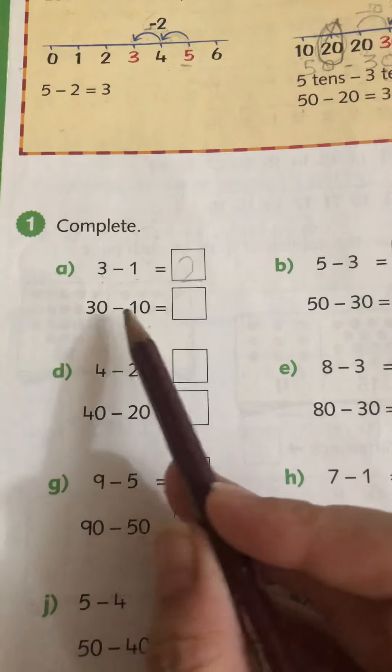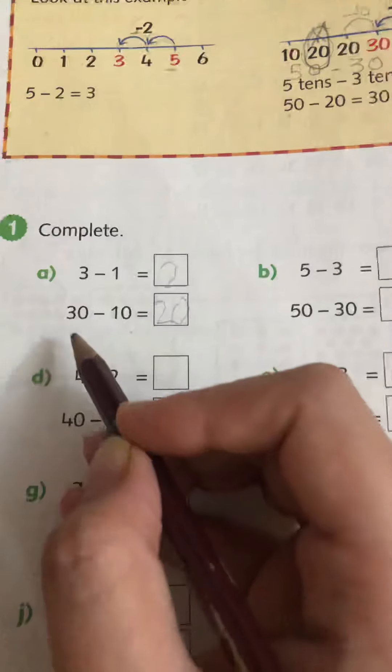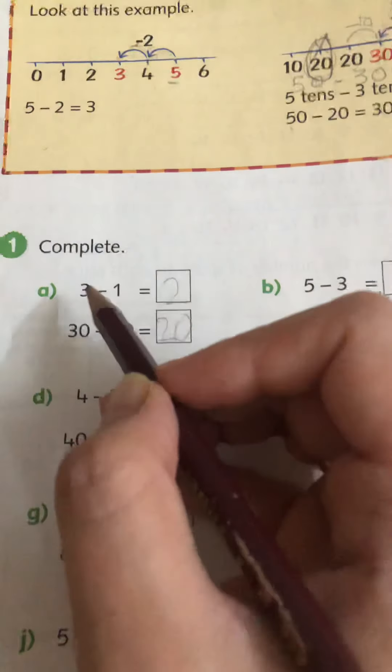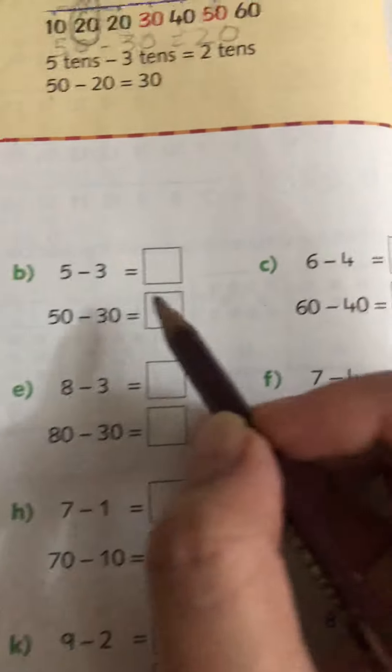These are tens now. So 2 tens is 20. So 30 take away 10 is 20. 3 take away 1 is 2. 30 take away 10 is 20. These are units, so these are tens. So they are very similar.